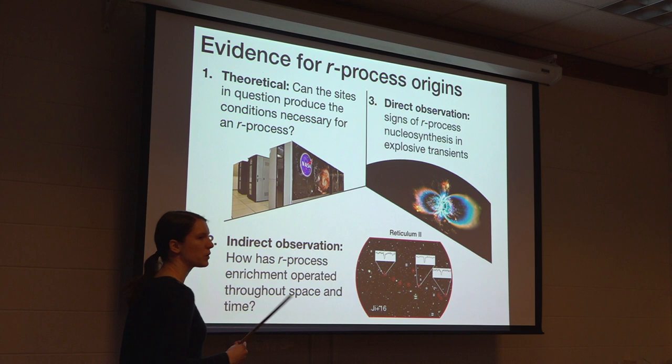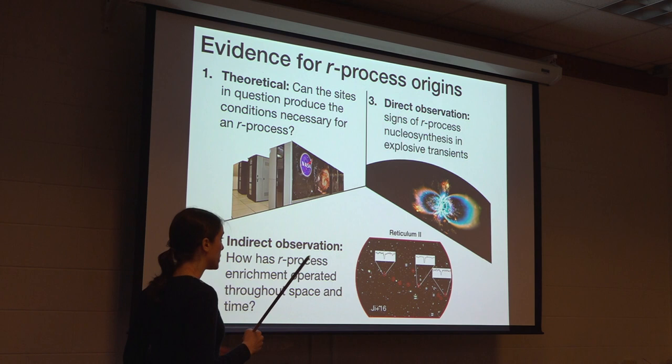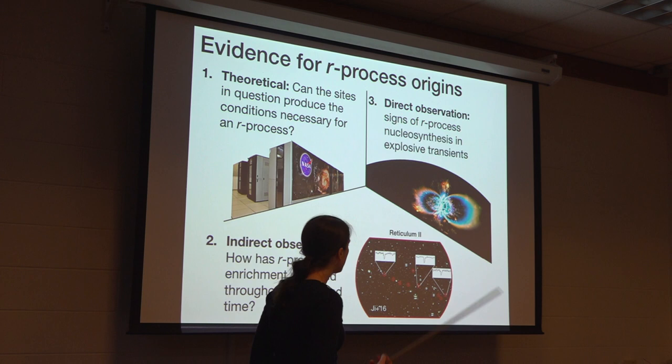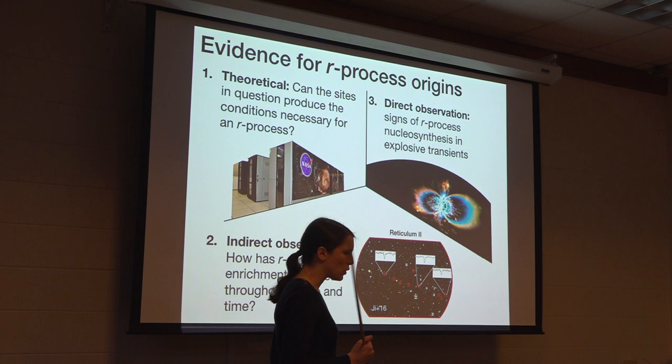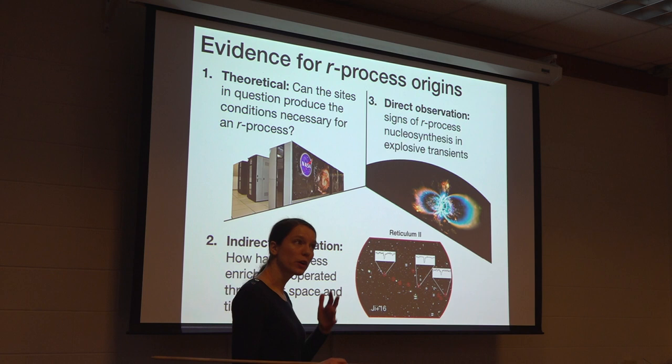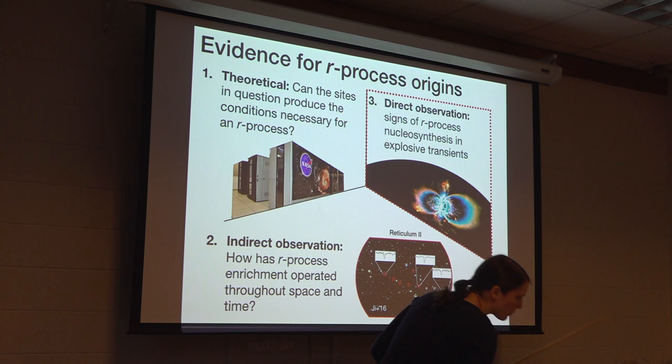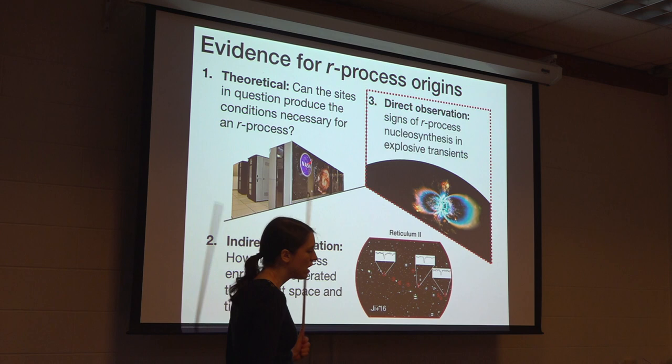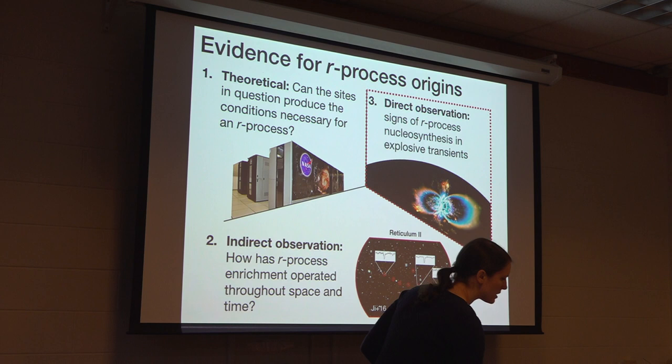Until very recently we had limited resources to evaluate these various production sites. We could use theory, which really means computation, to deduce whether particular explosion sites could actually give the conditions that the R-process requires. The second approach is indirect observation — looking at R-process abundances in stars and trying to determine the history of heavy element enrichment, asking whether the patterns we see are more consistent with one scenario or another.